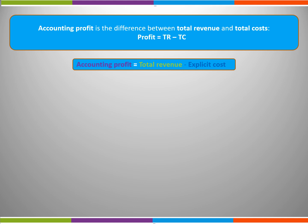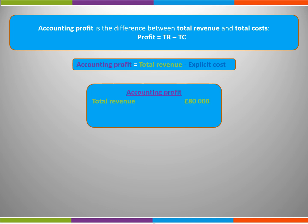Let's take a scenario of a firm operating in a market, making and selling wooden furniture such as tables. Last year it had total revenue of £80,000 and total costs of £60,000. Remember we can use the term explicit costs as a synonym for total costs, so the firm had explicit costs of £60,000. We can see that the firm made an accounting profit of £20,000.